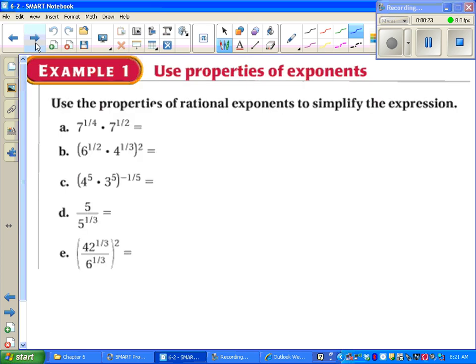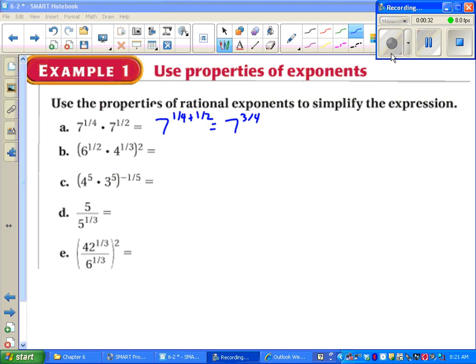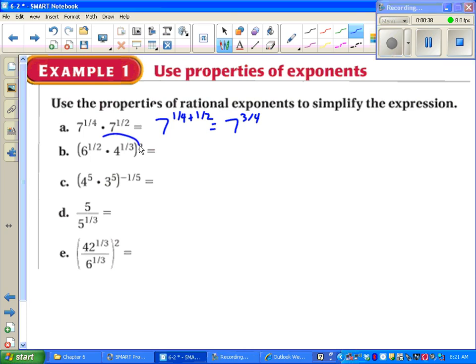So let's take a look. Part A, it says 7 to the 1/4 times 7 to the 1 1/2. As you should know, you add those exponents according to our rules of exponents. Part B, we've got a product of powers raised to a power. So we've got to multiply that 2 by each exponent.